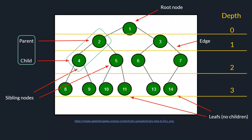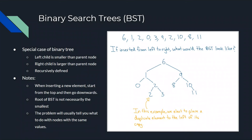Now that we've covered trees and binary trees, we can get to the binary search tree. A binary search tree is a special case of a binary tree where the left child is smaller than the parent node, and the right child is larger than the parent node — and this is recursively defined. The first node inserted into the binary search tree is always the root. When inserting a new element, you start from the root and go downwards: go left if the new element is less than the root, go right if it's greater.